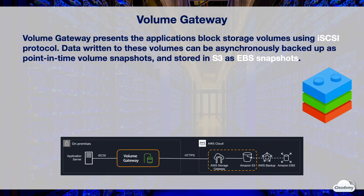Volume Gateway presents the application's block volumes using iSCSI protocol. Data written to these volumes can be asynchronously backed up as point-in-time volume snapshots and stored in S3 as EBS snapshots. These snapshots are incremental backups that capture only changed blocks, and the snapshot storage is compressed to minimize storage charges. You can back up on-premises volumes using the service's native snapshot scheduler or using the AWS Backup service. Customers often choose Volume Gateway to back up local applications and use it for disaster recovery based on EBS snapshots.